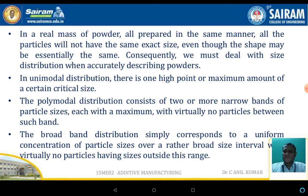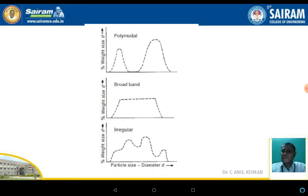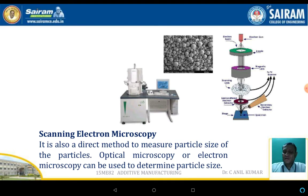The unimodal distribution, where a high point or maximum amount of some critical size is essential, is represented in this slide. SEM — scanning electron microscopy — is the microscopy used to find out the size of the particle.